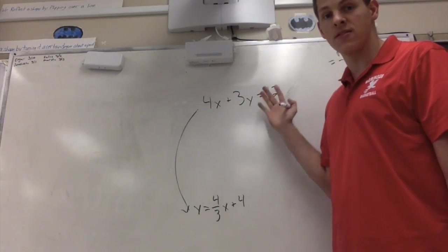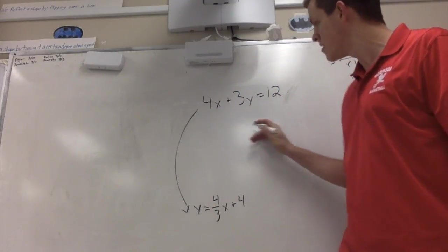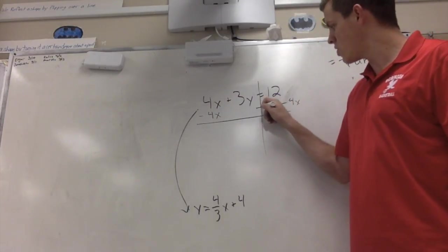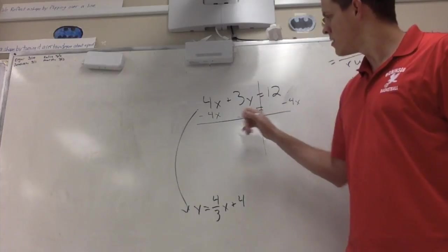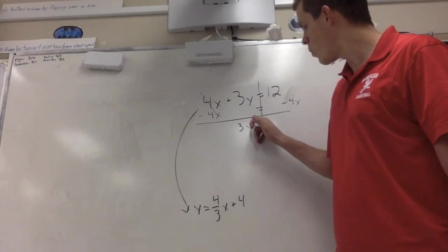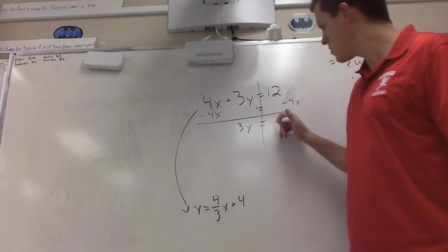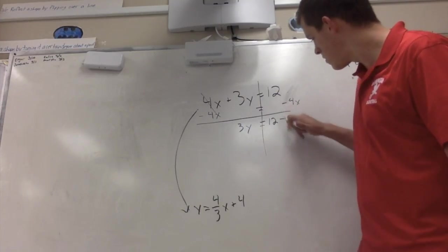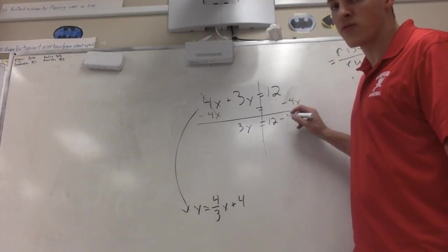So the first thing we can see is this is being added, so I can subtract the 4x from both sides, not just one side but both sides. If I do that, these two are still equal, right? So I can do it. These are going to cancel out. I'm going to be left with 3y equals 12 minus 4x.